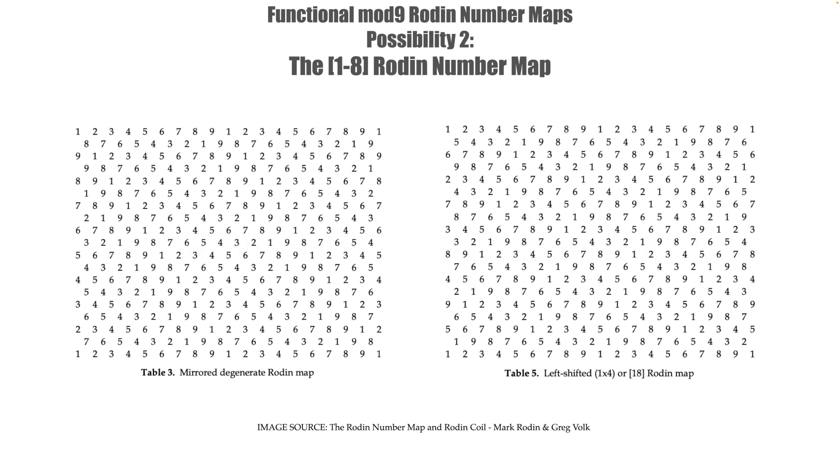This is possibility 2, the 1-8 Rodin number map or the 1 by 4. This time we do the exact opposite. Starting with our mirrored degenerate one by one number map again we take the first, fourth and seventh rows from the top row and we shift them three steps to the left in the same fashion that we did in the last example but just in reverse this time. Then we take the second, fifth and eighth rows from the top row and shift them three steps to the right again. Then we repeat that pattern again just as we did in the first example. This time we can see that the numbers in the first row still increase by one each step and then the numbers in the first column now increase in steps of four. Hence this can also be called the one by four map.